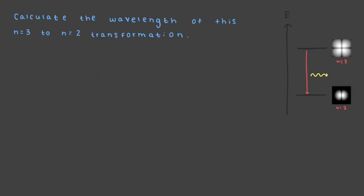Calculate the wavelength of this n equals 3 to n equals 2 transformation. Our initial wave is n equals 3. When this electron emits light, the new state is n equals 2. This is our n final. That means that delta E equal to E final minus E initial is equal to E sub 2 minus E sub 3.